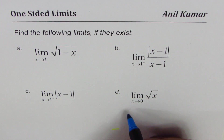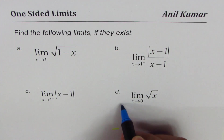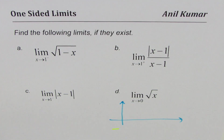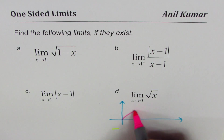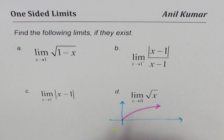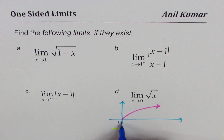This one here is the limit as x approaches 0 for square root of x. Let's sketch the graph. We know for square root of x, the domain and range are in quadrant 1. That is how square root of x looks like.